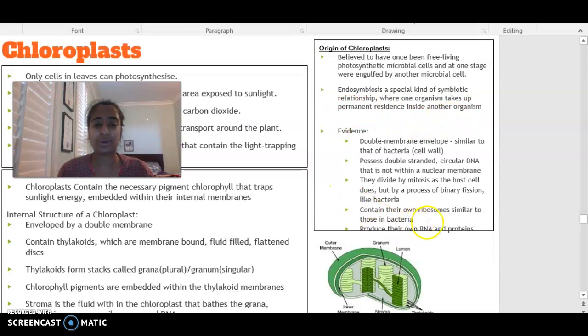In terms of looking at evidence for why we believe that chloroplasts were once free-living cells, they have that double membrane envelope, they have circular DNA, they have cell division occurring, so they can divide by mitosis as a normal host cell does. They contain their own ribosomes, similar to that of bacteria, and they are able to produce their RNA and their own proteins. So once upon a time, these chloroplasts were free-living.